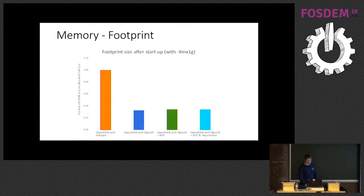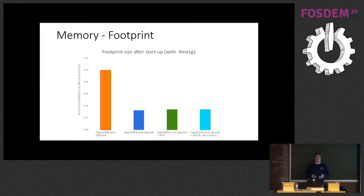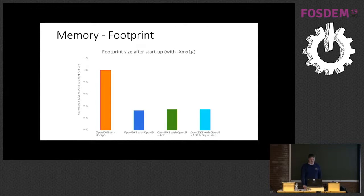I was also contacted with some updated numbers for JDK 11 when running DayTrader 3 — a tool you can use to measure memory usage consistently. The output from Hotspot was 423 megabytes for the footprint, and for OpenJ9 it was 57% less at 182 megabytes. Which is a very efficient little system.